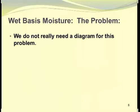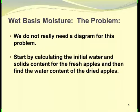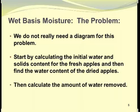We really don't need a diagram for this problem. We can start by calculating the initial water and solids content for the fresh apples and then find the water content of the dried apples. Once this is done, we can calculate the amount of water removed. Having done this, we will do similar calculations for the potatoes.